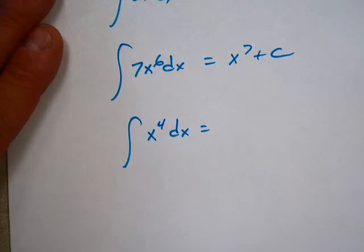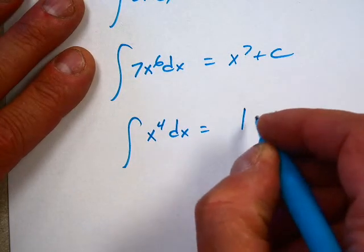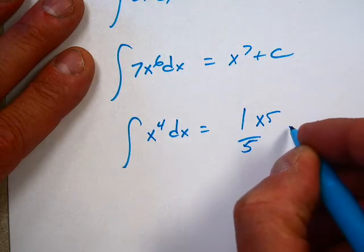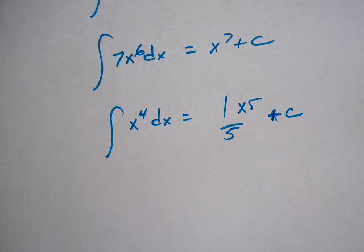But what if I do something funky? Like if I say, this is x to the 4th. Now, I'll give you, you're going backwards. You're going backwards. You're not differentiating. You're doing the opposite of differentiating. 1/5 x to the 5th.